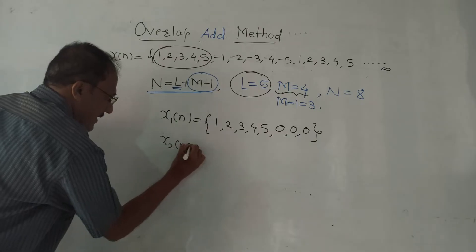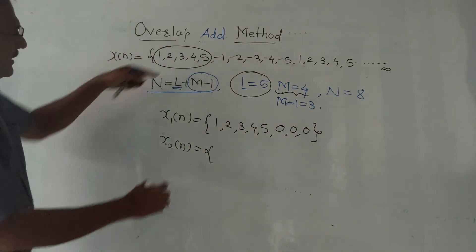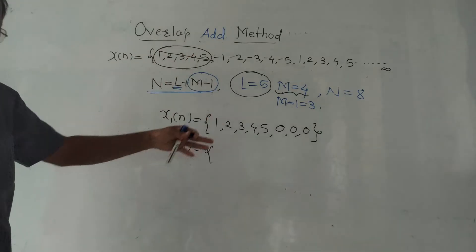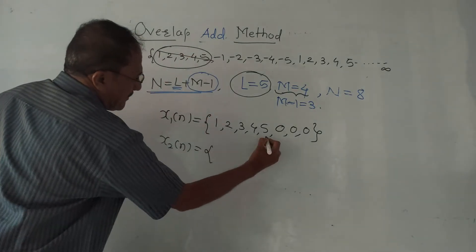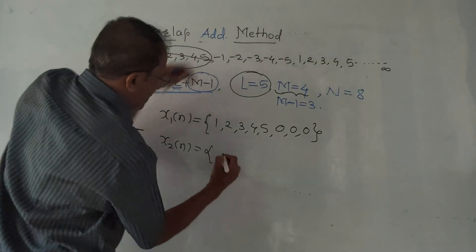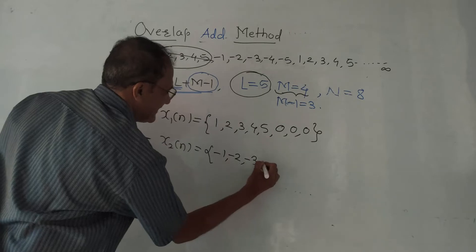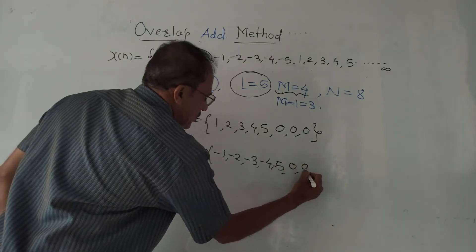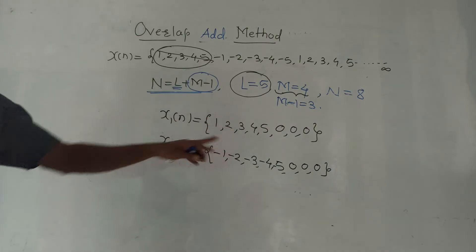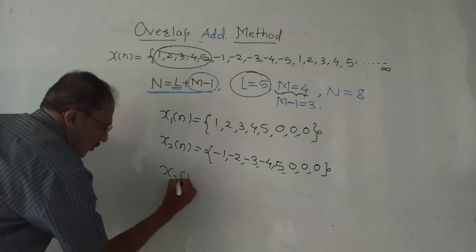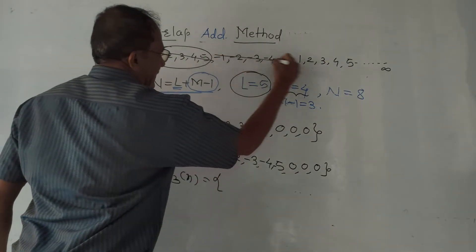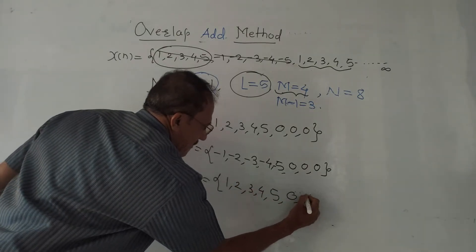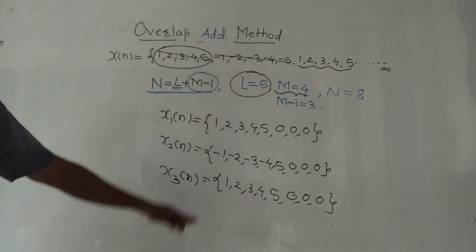For the second block, we don't take any samples from the previous block. Just take the next 5 samples from X(n): -1, -2, -3, -4, -5, and again add 3 zeros at the end to adjust the length to 8. For X3(n), take the next 5 samples: 1, 2, 3, 4, 5, and again add 3 zeros. Likewise, different blocks are formed — each containing L samples followed by M-1 zeros.